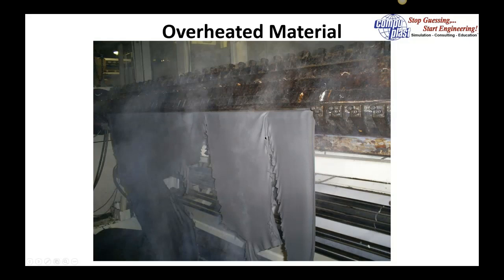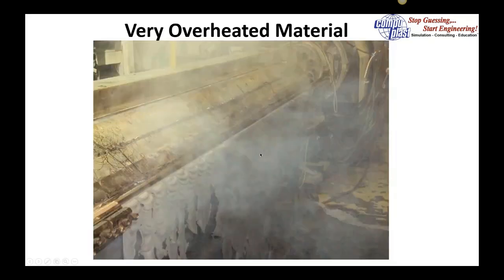Here we see overheated material making it difficult to produce this sheet as the gassing causes the sheet to tear and be discontinuous. Here we have some very overheated material causing a lot of gassing and rippling of the sheet to the point where you cannot make an acceptable product.